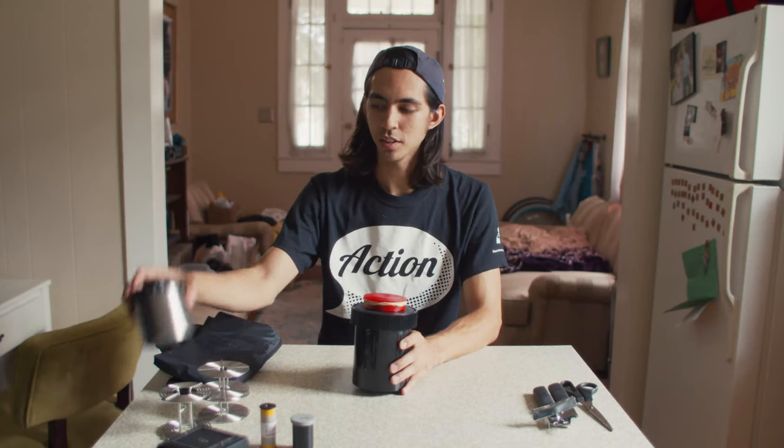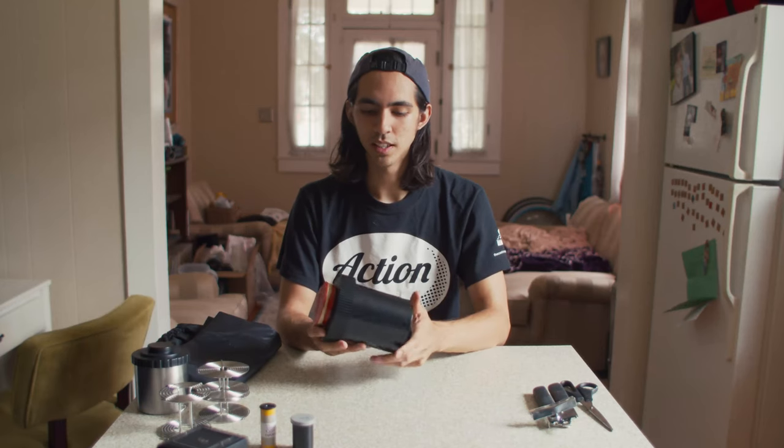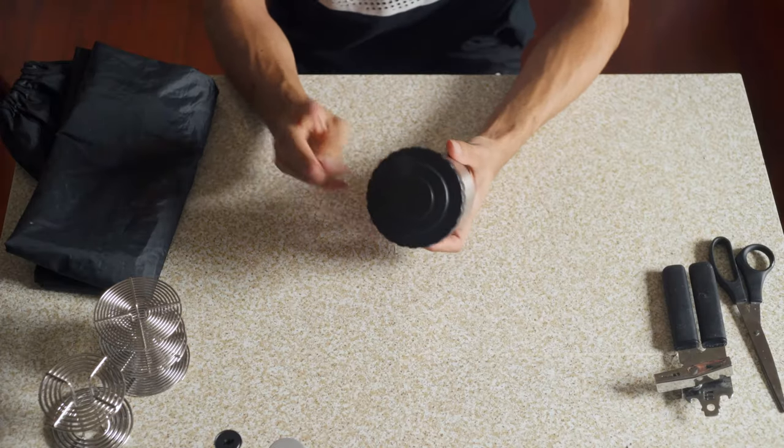The reason I like stainless steel development tanks better is they take about half of the amount of liquid to develop the same amount of film. In a plastic tank, you need a whole liter to develop just two rolls of 35mm film. But with a stainless steel tank, you can develop two rolls with half a liter, or 500 milliliters.